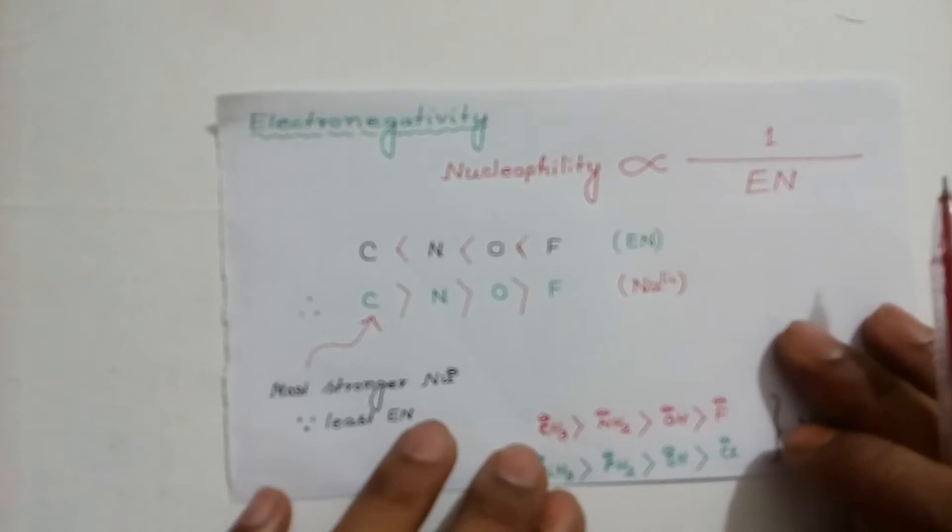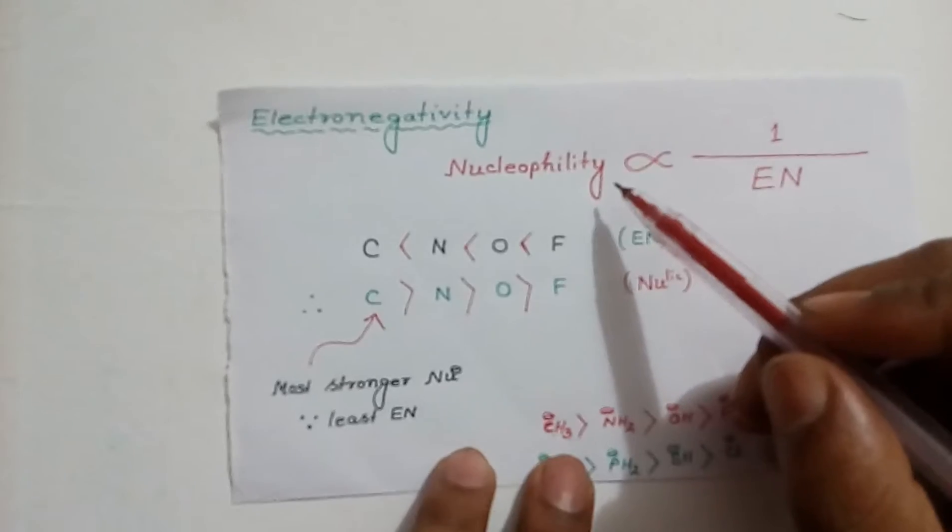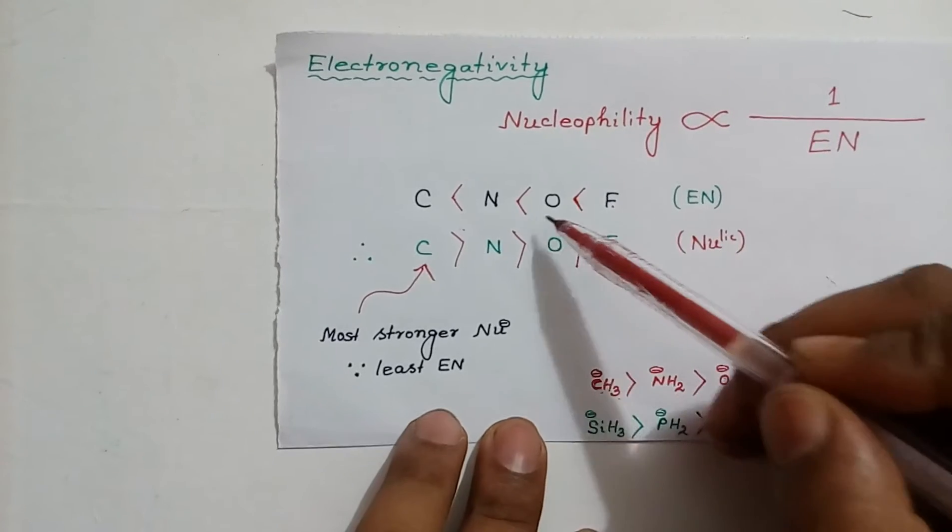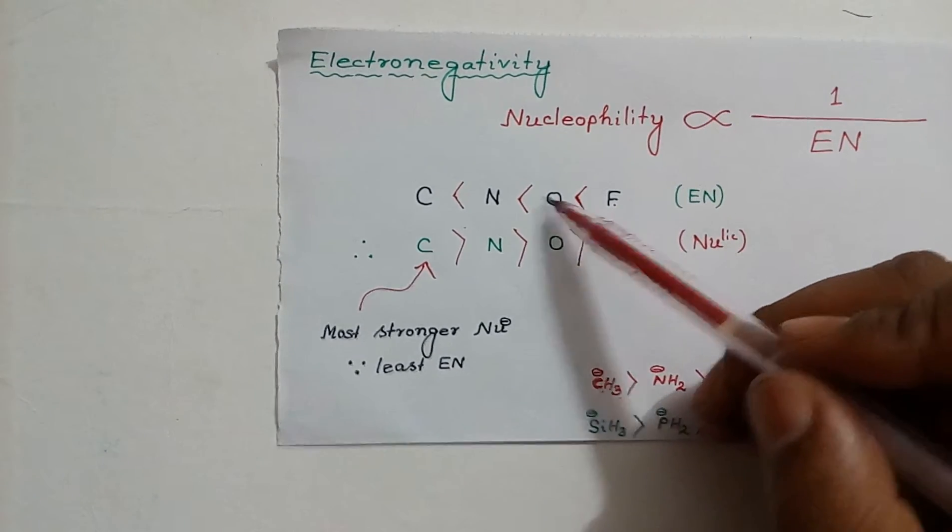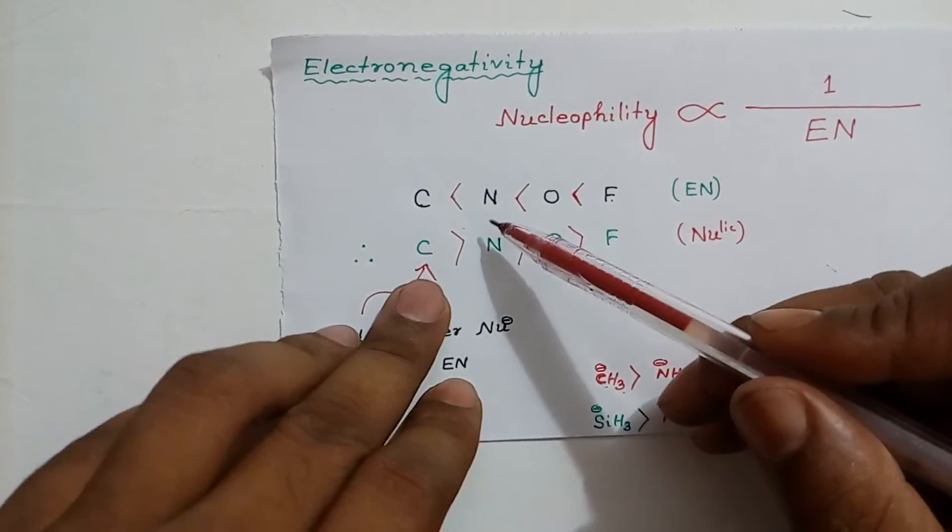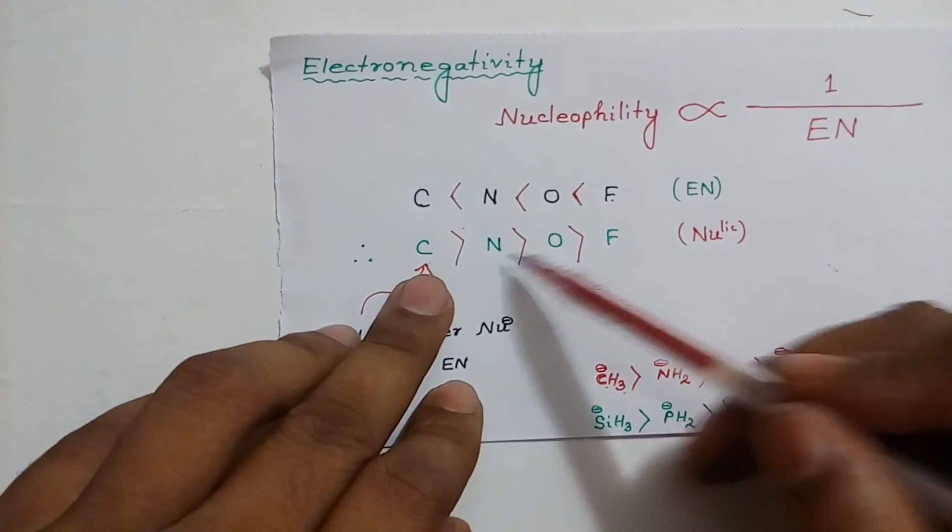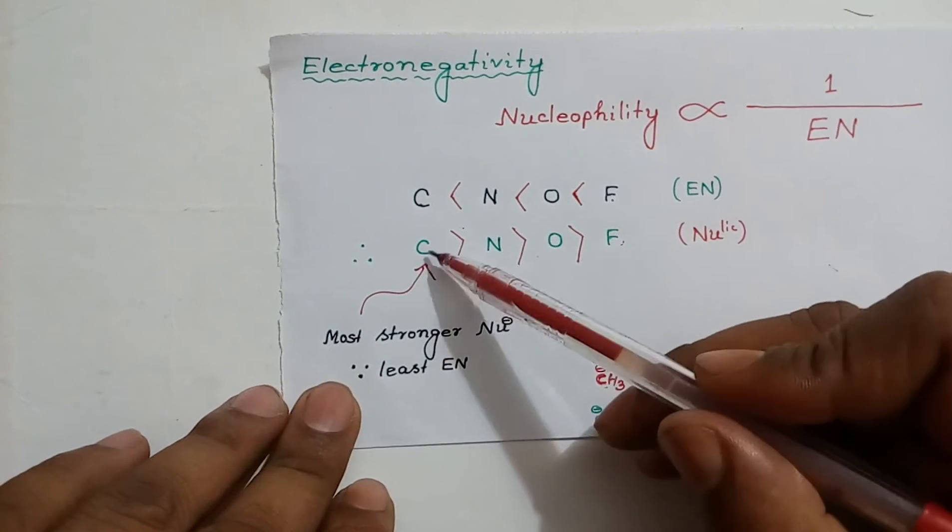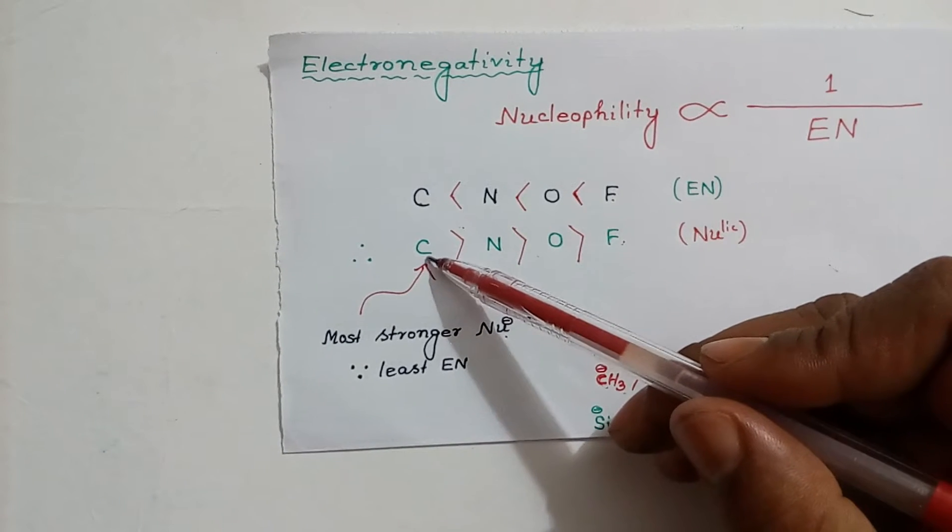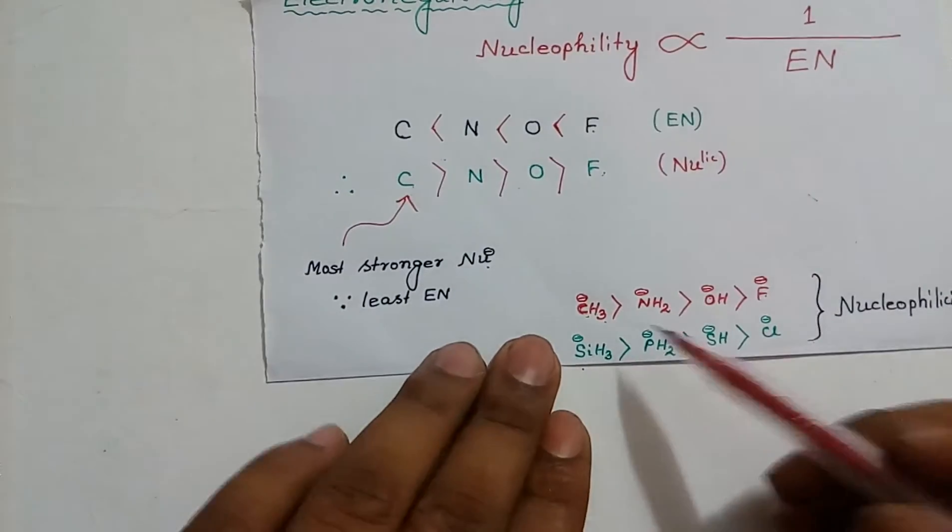Next factor is electronegativity. More the electronegativity, lesser is its nucleophilicity. Fluorine is more electronegative than oxygen. Oxygen is more electronegative than nitrogen. And nitrogen is more electronegative than carbon. And their nucleophilicity order is in the reverse order. Carbon is more nucleophilic than nitrogen than oxygen than fluorine. Carbon is most stronger nucleophile. Since it is least electronegative. Lesser the electronegativity, more is its nucleophilicity.